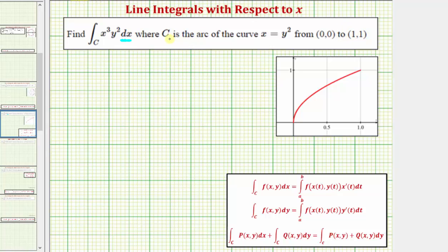Let's first take a look at the curve C in the xy plane. Here we have the graph of x equals y squared. Notice how this point at the origin is the point (0,0) and this point is the point (1,1). So this is the path of integration, but we're only integrating with respect to x, not arc length.